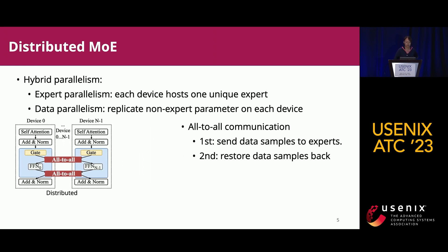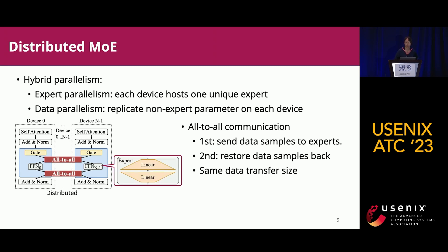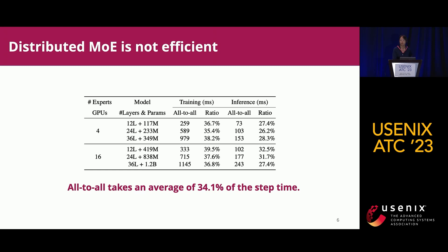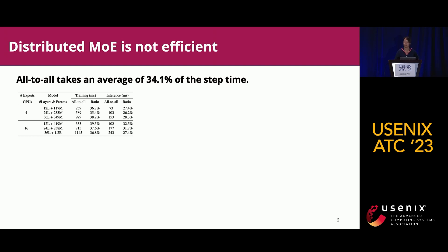A unique thing about transformer-based MOE is that the data transfer size in both all-to-all operations is the same because the expert network has the same input and output size. However, distributed MOE is not efficient. From experiments on different scale MOE models, all-to-all actually takes an average of 34% of the step time, which is quite significant.